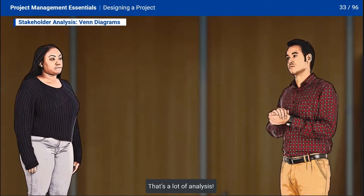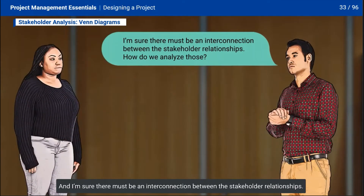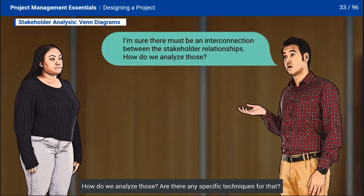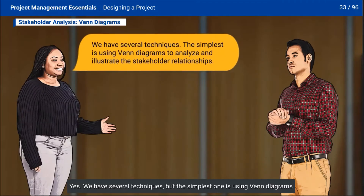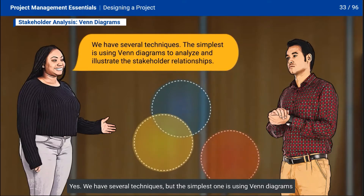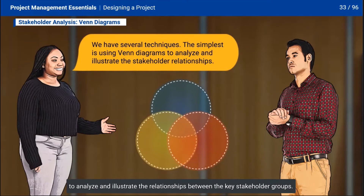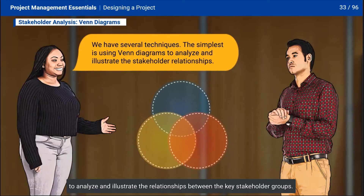That's a lot of analysis and I'm sure there must be an interconnection between the stakeholder relationships. How do we analyze those? Are there any specific techniques for that? Yes, we have several techniques, but the simplest one is using Venn diagrams to analyze and illustrate the relationships between the key stakeholder groups.